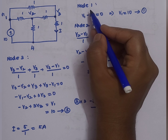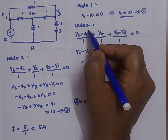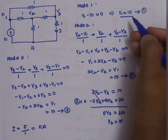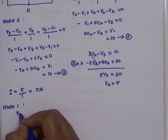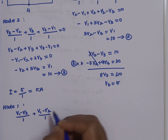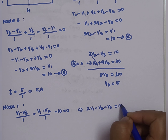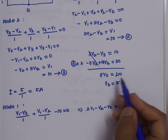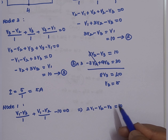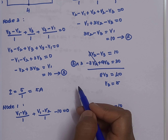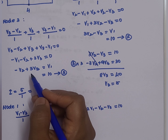Even if we apply the standard KCL procedure at node 1 instead of the direct method, we still get V1 = 10. For node 1, the equation is: (V1 − V3)/1 + (V1 − V2)/1 − 10 = 0, giving 2V1 − V2 − V3 = 10. Solving mutually with the other equations still yields V1 = 10. The direct method applies whenever a voltage source is connected between the principal node and the reference node.